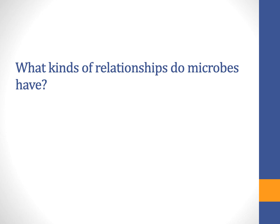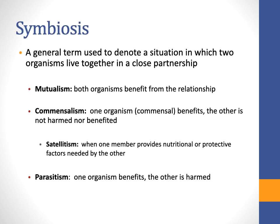Microbes also have relationships — symbiotic relationships where they're living closely with another organism or their host, which can be beneficial or not. In a mutualistic relationship, both organisms benefit — for example, gut microbes where the host provides a place to live and microbes produce vitamins or enzymes. In a commensal relationship, one organism benefits and the other is neither harmed nor benefited. Parasitism is where one organism benefits and the other is harmed.